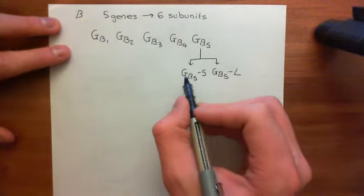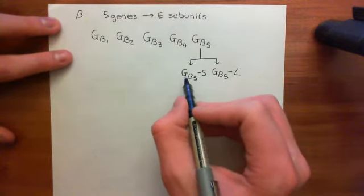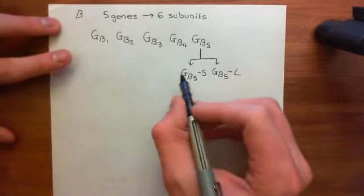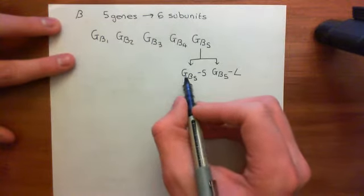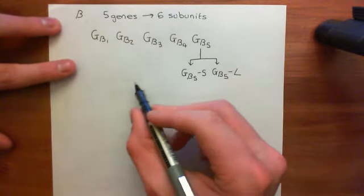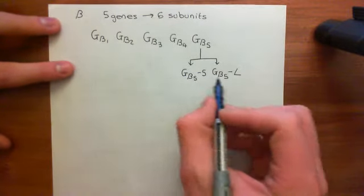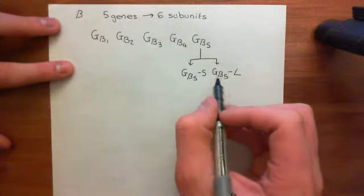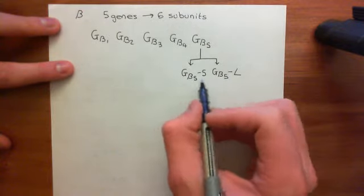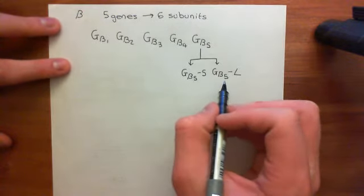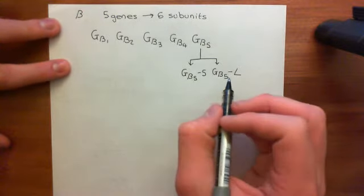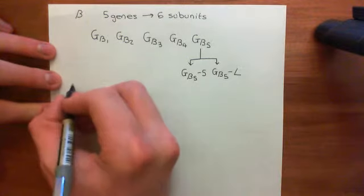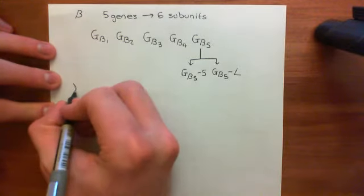We've seen 21 different alpha subunits — we only looked at the genes for those, but there are 21 different alpha subunits. There are now six different beta subunits, so there is a huge scope for creating a vast plethora of heterotrimeric G proteins.